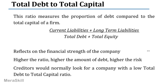One of them is total debt to total capital. This ratio measures the proportion of debt compared to the total capital of the fund — all debt, entire short-term and long-term debt. This reflects the financial strength of the company. Higher the ratio, higher is the amount of debt and higher the risk.